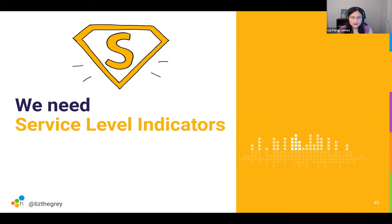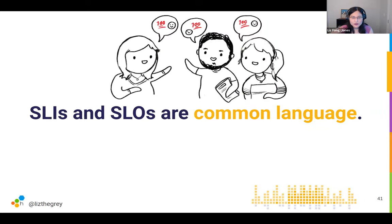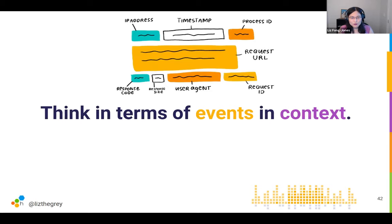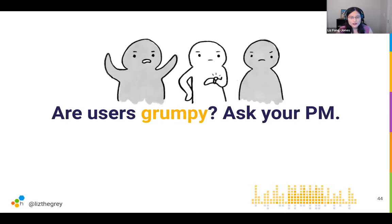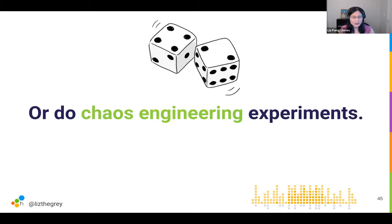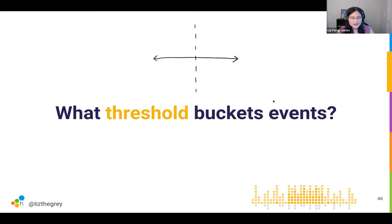An SLI or SLO allows you to express a constraint about reliability in language that your product manager, your customers, and you as an engineer can understand. To measure an SLI, you think about the critical user journeys your customers are trying to achieve, relevant context about those journeys, and which events are good or bad. For instance, is a transaction that took 550 milliseconds and returned an HTTP 302 a good or bad event? One way to find out is to ask your product manager about the constraints, or ask your UX researcher what's too slow for customers. Or deliberately introduce chaos and see at what point it feels too sluggish.